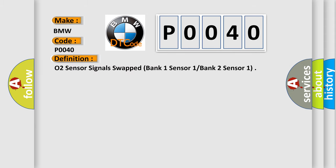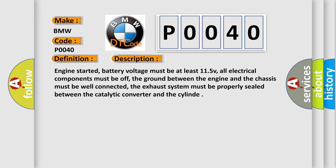The basic definition is O2 sensor signals swapped, bank 1 sensor 1, bank 2 sensor 1. And now this is a short description of this DTC code.